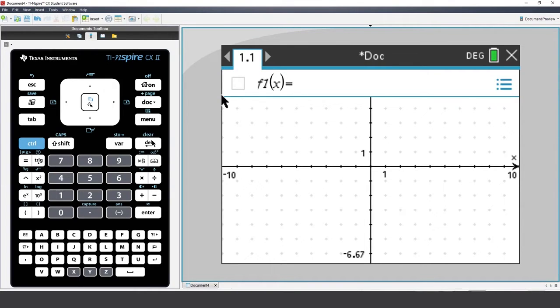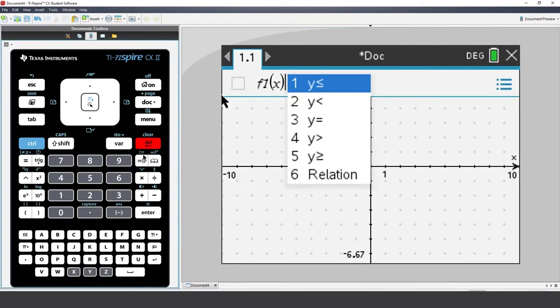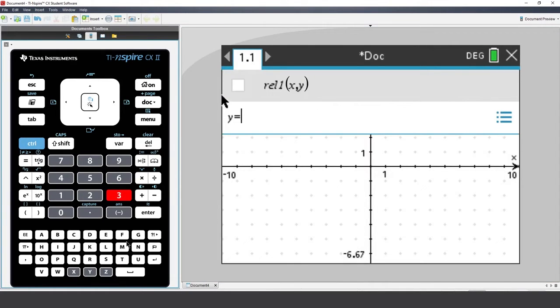Press the Delete key to remove the equal sign and select y equals. Now type m multiplied by x plus c, then press Enter.